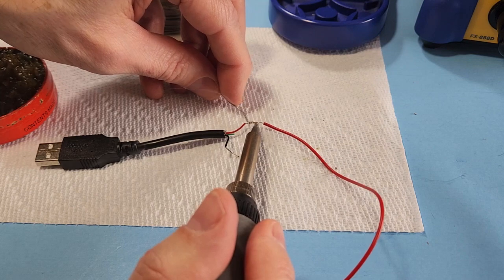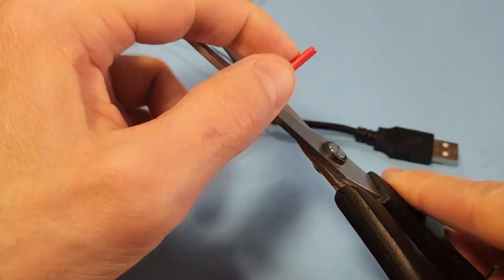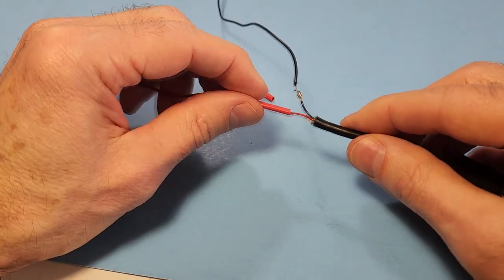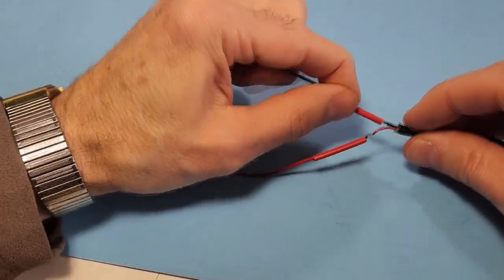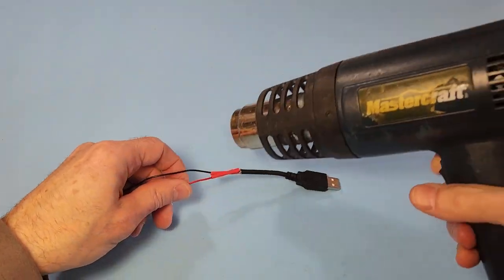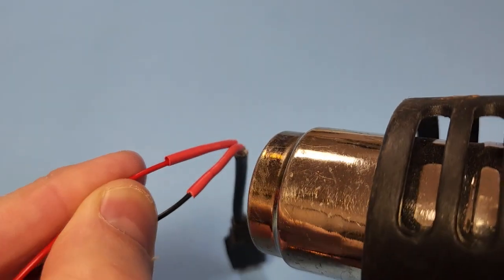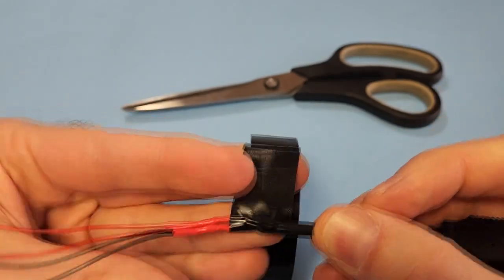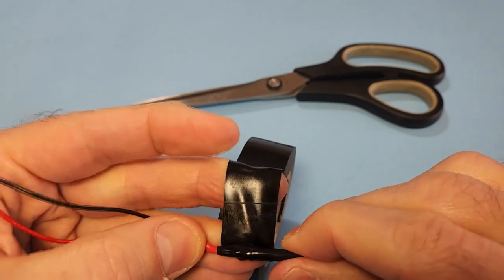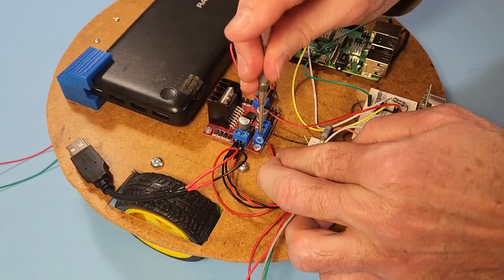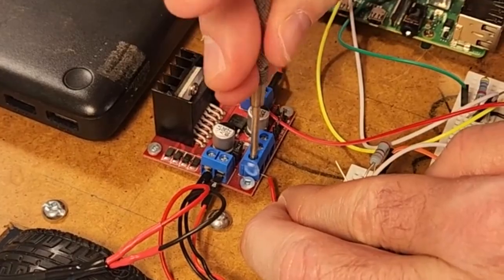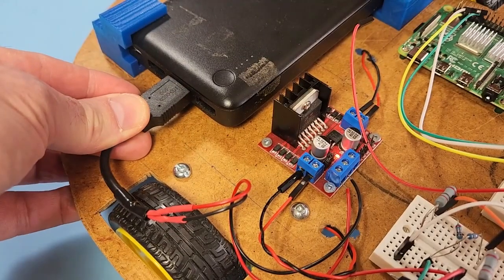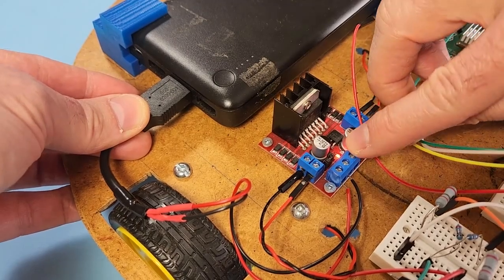I next solder on some thicker 24 gauge solid red and black wires of my own. These will also be more flexible than the original USB cable. To prevent the two exposed wires from touching, I cut up some heat shrink tubing and slide it on. I have only red tubing of this size. I get out a heat gun and shrink the tubing onto the wires. I was thinking of leaving it at that, but the very thin USB wires can break easily, so I wrap on a little electrical tape. Here's the new cable. I connect the red to the L298N's 5 volt input and the black to the power ground. I plug into the battery, and you can see that the L298N's LED lights up.